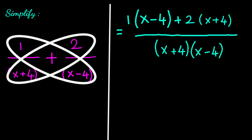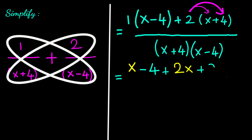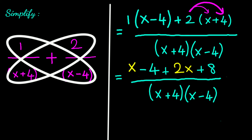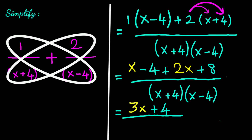1 times (x minus 4) is x minus 4. Then 2 times x is 2x, and 2 times 4 is positive 8, all divided by (x plus 4) times (x minus 4). Here positive x and positive 2x are like terms. Adding them gives 3x, and negative 4 plus 8 is positive 4, so we have (3x plus 4) divided by (x plus 4)(x minus 4).